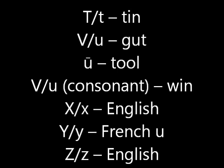The letter U would be a U sound, as in gut. A long U would be an OO sound, as in tool. Sometimes a U can act like a consonant, which is where we get the letter V from — but we pronounce it like the letter W, which is where that letter comes from. So you would pronounce it like a W sound, as in win. X you would pronounce as in English. The letter Y is a tricky sound, as it's one we don't use in English — it's a kind of a U sound. And the letter Z you would pronounce as in English.